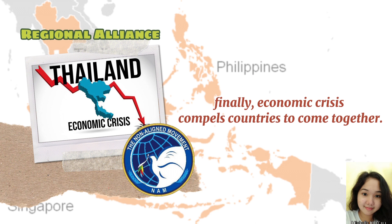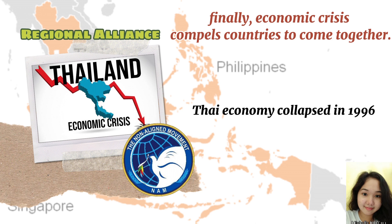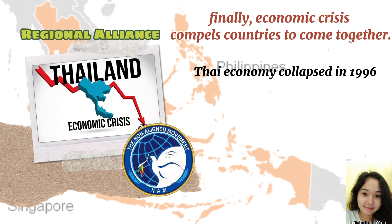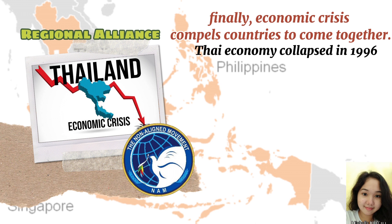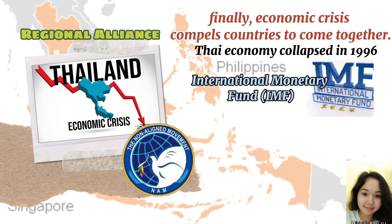Finally, economic crisis compels countries to come together. For example, the Thai economy collapsed in 1996 after foreign currency speculators and troubled international banks demanded that the Thai government pay back its loans. There was a rapid withdrawal of foreign investment that bankrupted the economy of Thailand. This crisis spread to other Asian countries as their currencies were devalued and foreign investments were withdrawn in a hurry. The International Monetary Fund, or IMF, tried to reverse the crisis.